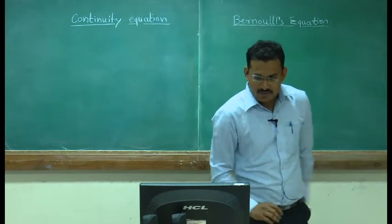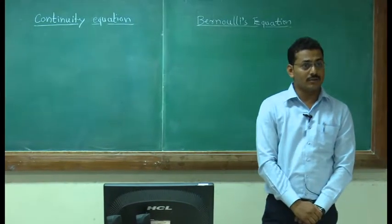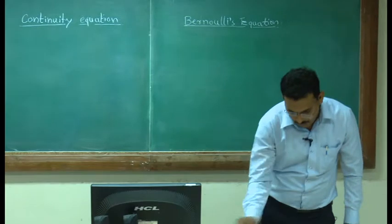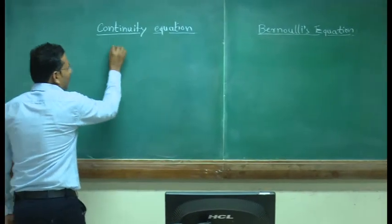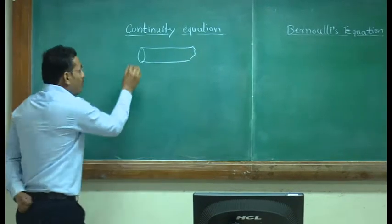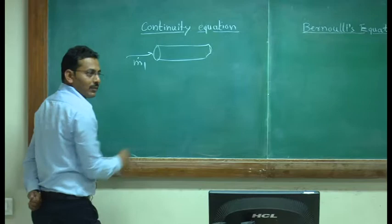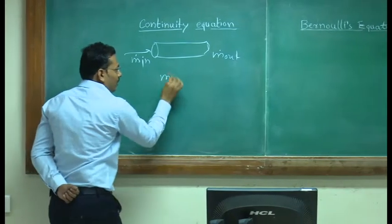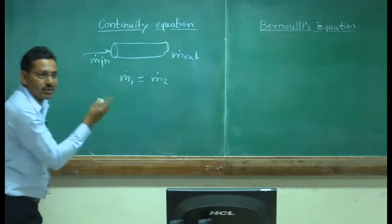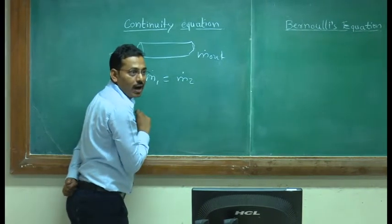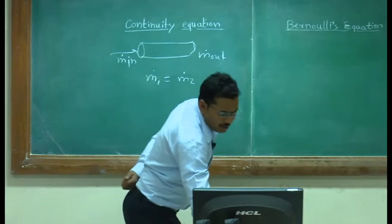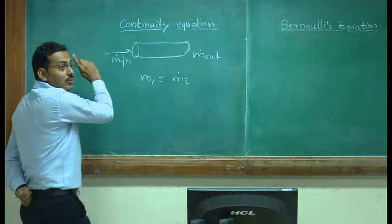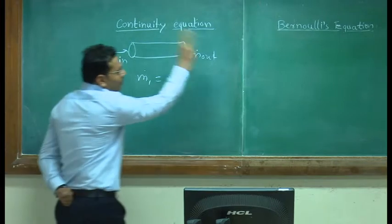Now let us begin with the first point: the continuity equation. What is this? It is the law of conservation of mass applied to fluid flow. What is the law of conservation of mass? If I take any object or any pipe, whatever the mass flow rate in should be equal to the mass flow rate out. So I can write here m1 equals m2. This is mass flow rate in equals mass flow rate out. The continuity equation says that in a confined system, whatever enters at the inlet should be at the outlet.